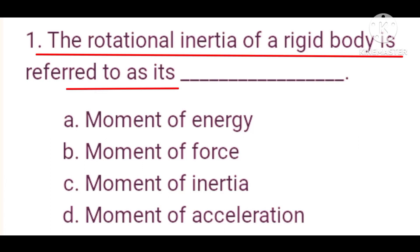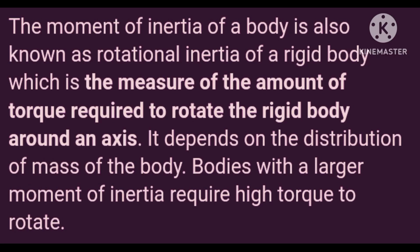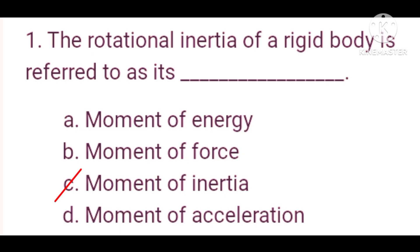Question number one: the rotational inertia of a body is referred to as its moment of inertia. The moment of inertia of a body is also known as the rotational inertia of a rigid body, which is the measure of the amount of torque required to rotate the rigid body around its axis. It depends on the distribution of mass of the body. A body with a large moment of inertia requires high torque to rotate. The correct option is moment of inertia.